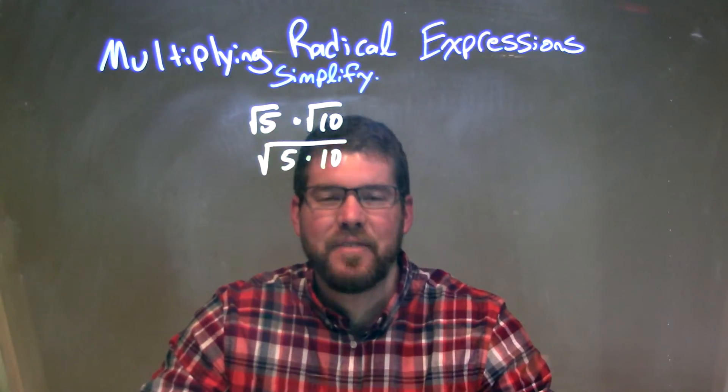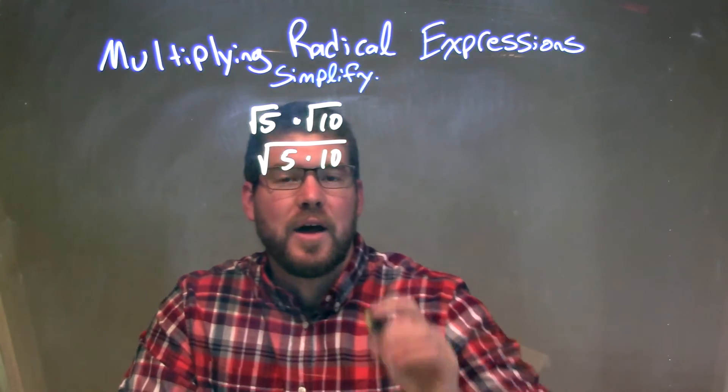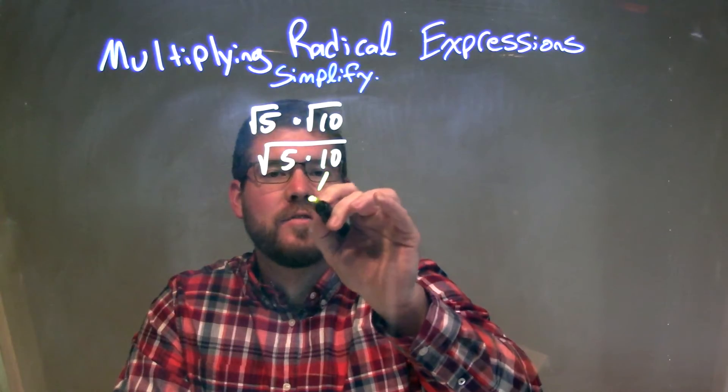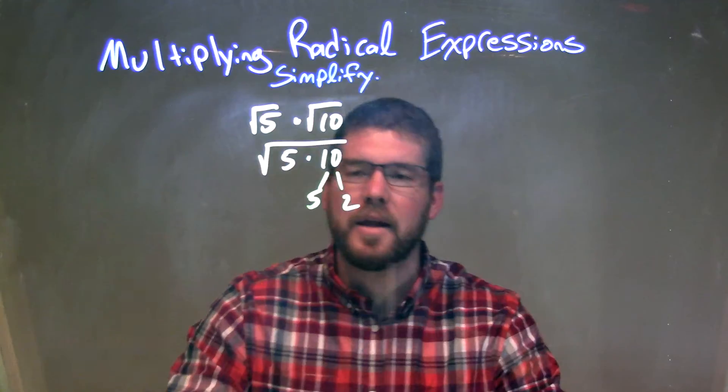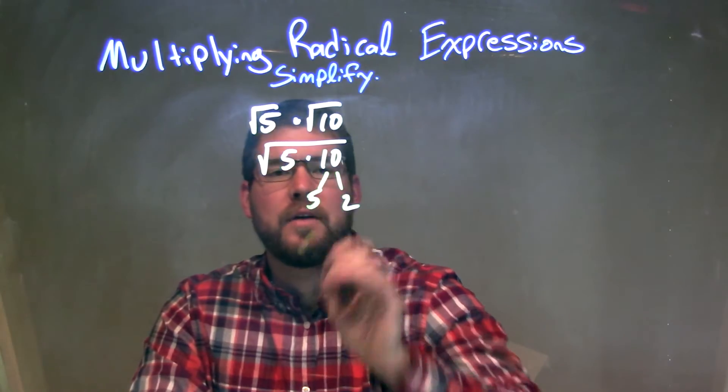Well, what I want to do now is see if I can break this down. There's some prime factorization here. Well, 10 is 5 times 2, so in reality, whatever 5 times 10 is, is the same thing as 5 times 5 times 2.